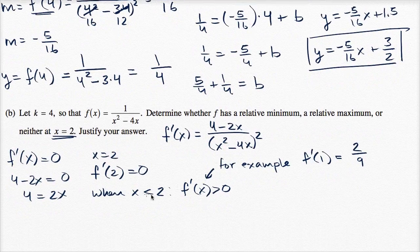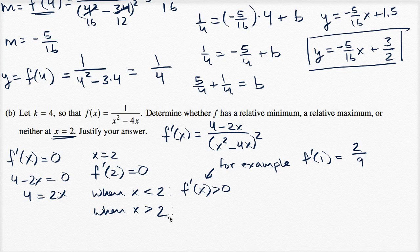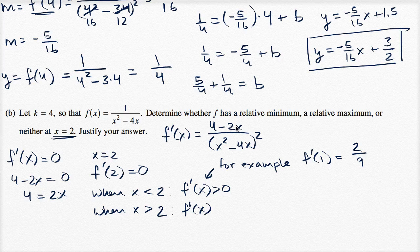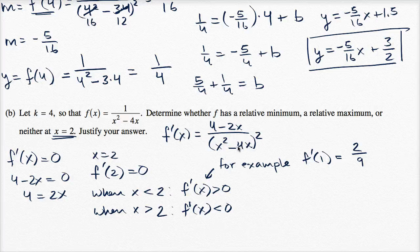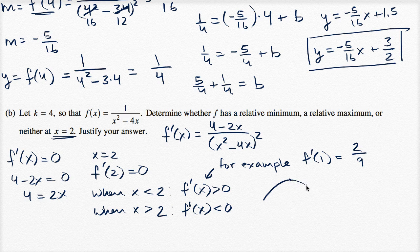When x is greater than two, f prime of x - well, when x is greater than two, you're gonna have four minus two times something larger than four, so this is going to be negative. So f prime of x is going to be less than zero. Up here is going to be negative, down here is not going to be negative. So if we are increasing as we approach something and then our slope is zero, and then we are decreasing, well then this is going to be a maximum point.